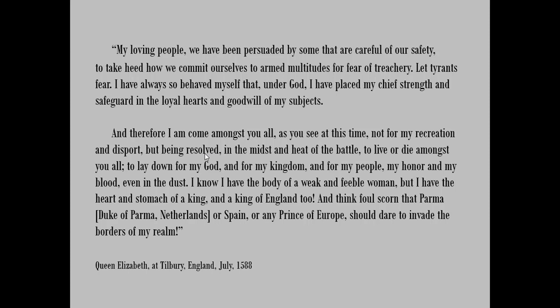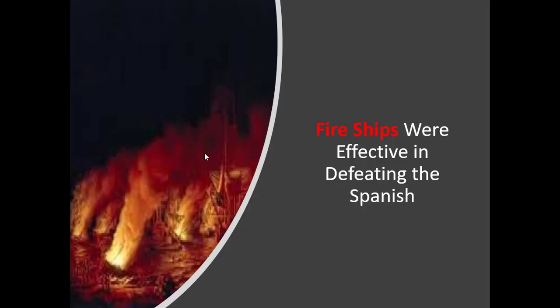When the storm finally ended and the seas calmed down, the Spanish were scattered everywhere and in no way organized. So the English sent what are called fire ships, aimed at them. A fire ship is a ship you're willing to sacrifice — you tie down the steering so it goes straight ahead, light the ship on fire, and point it at the enemy. Since all these ships are made of wood, by the time the burning ship crosses the ocean and crashes into a Spanish ship, all the burning lumber and rigging falls on the Spanish ship and it goes up in flames.